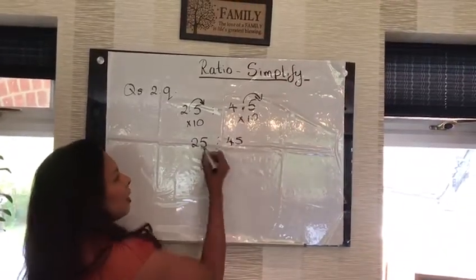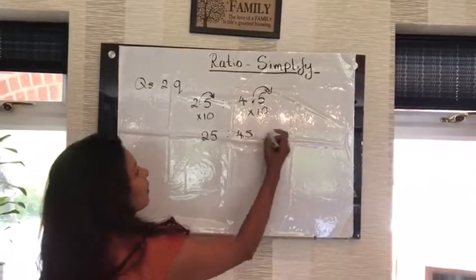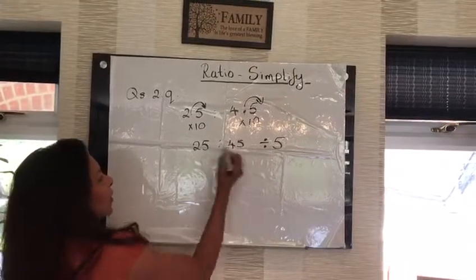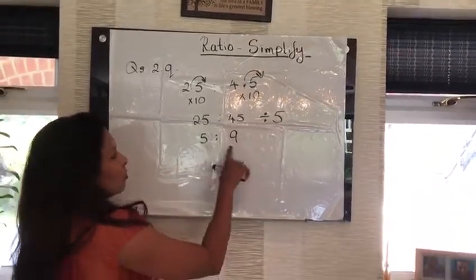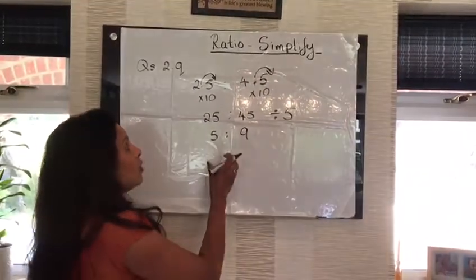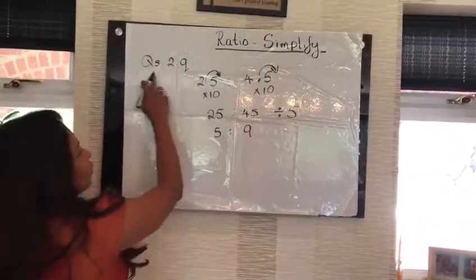Now you can simplify. I'm going to find the number that you can divide both these numbers by, which is 5. I'm going to divide both of them by 5, 5 times 5, 5 times 9. Need to double check and see whether you can simplify any further. I can't simplify any further, that's the final answer for question 2Q.